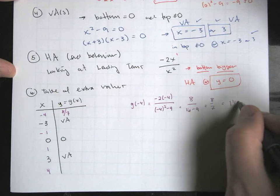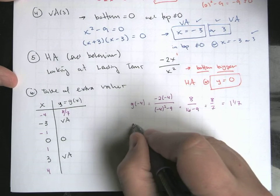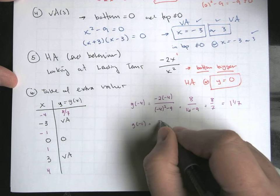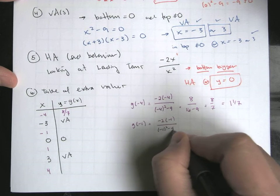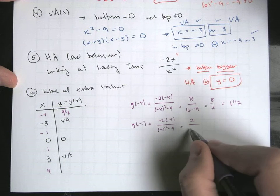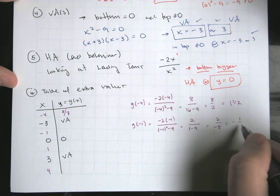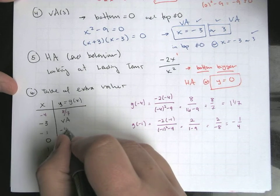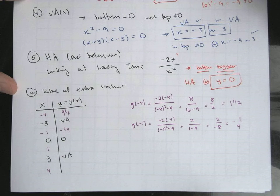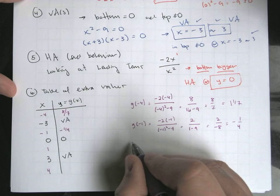So that's like one and one seventh, a little bit bigger than one. At negative one, so negative two times negative one, negative one squared minus nine. So that's going to be positive two. This is one minus nine. So that's two over a negative eight. So these are actually pretty small, negative one quarter. We might need to kind of keep these values in mind when we do our scaling on the graph. If we get kind of small values like this, it might be the case that we need to kind of graph accordingly.